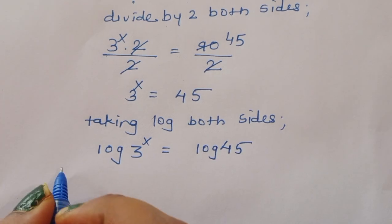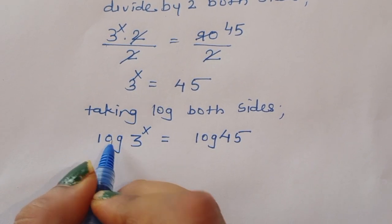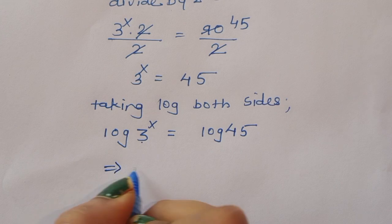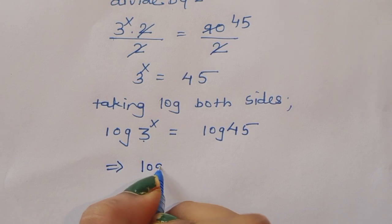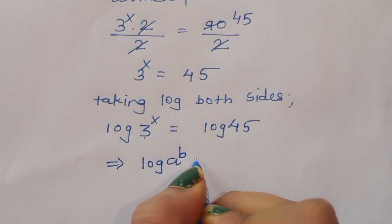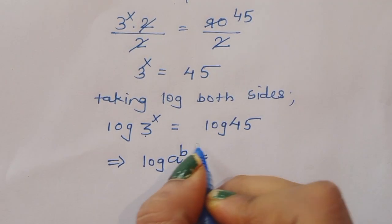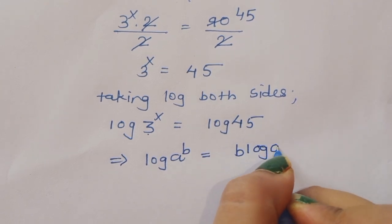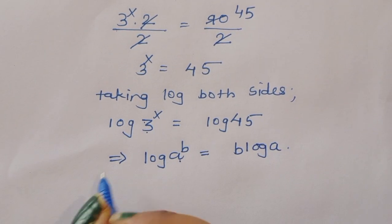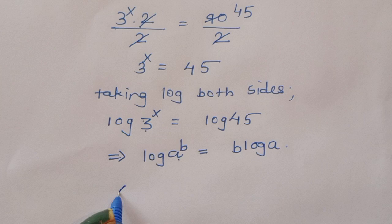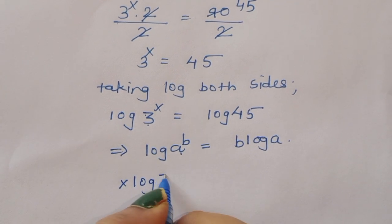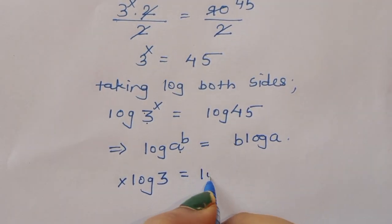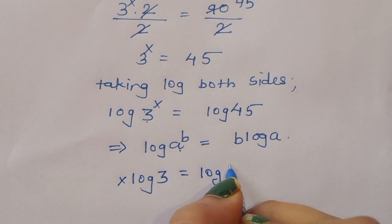We apply the formula: log of a power b is equal to b times log of a. Using this formula, log of 3 power x becomes x times log of 3, so x log of 3 is equal to log of 45.